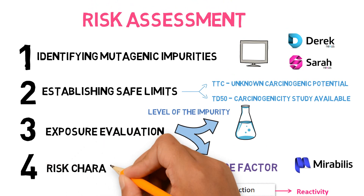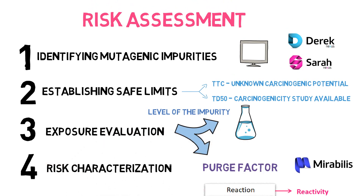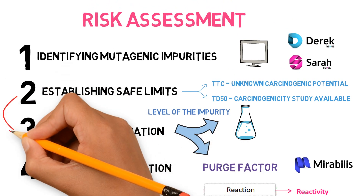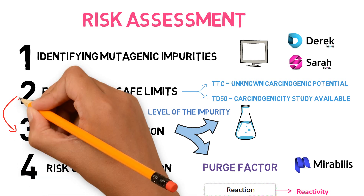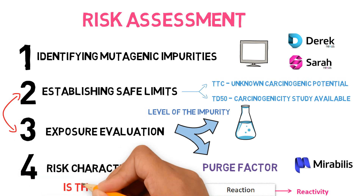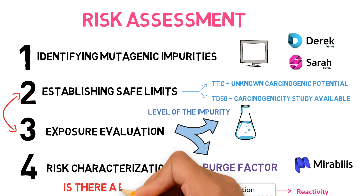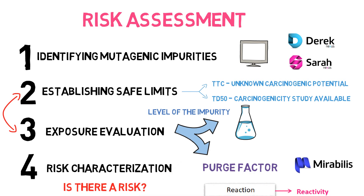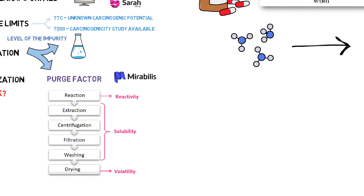The fourth stage is risk characterization. Here is where we compare the results obtained with the safe limits, which will finally indicate whether there is a risk or not. After concluding the risk assessment, ICH M7 states that a control strategy must be defined for each potentially mutagenic impurity.